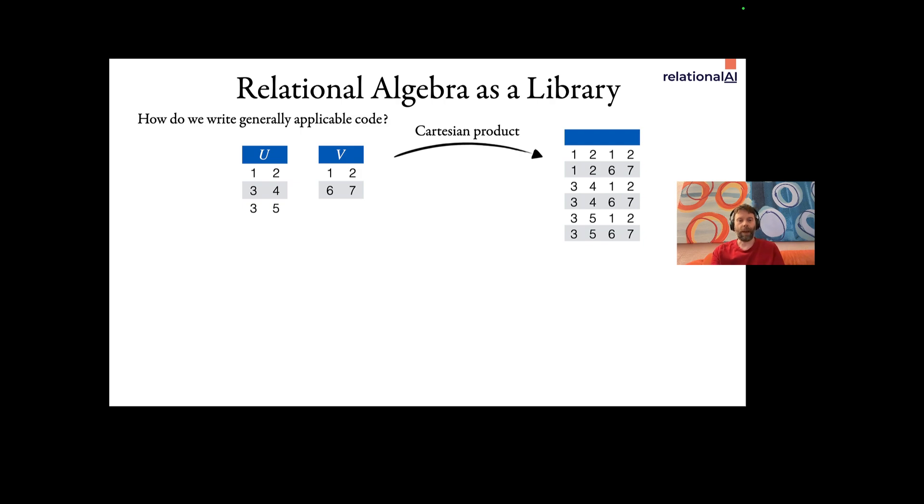So let's look at defining relational algebra as a library. So you know what's Cartesian product, right? So you basically join everything with everything. Defining the Cartesian product of this relation u and v here, it works in rel like this. So here I'm saying that product u, v is the relation that has all the tuples a, b, c, d, such that a, b is in u and c, d is in v, right?